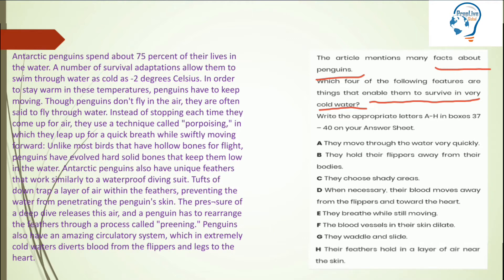In the beginning it is written: 'Antarctic penguins spend about seventy-five percent of their lives in the water.' Facts are coming now. It says: 'In order to stay warm in these temperatures, penguins have to keep moving.' Match this with the options — penguins have to keep moving to stay warm. So in these temperatures, to survive and stay warm, they have to keep moving.